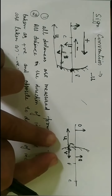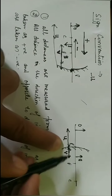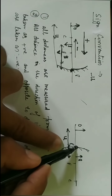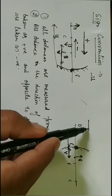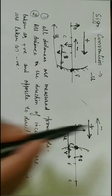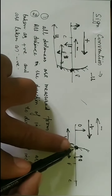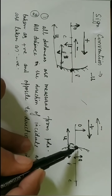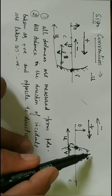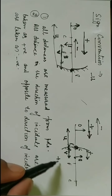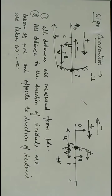Similarly, if you want to measure the image distance, you start your journey from P. You see the direction of incidence — opposite to it is taken as negative. From the pole, measuring the image distance means moving in the same direction as the direction of incidence, so it is taken as positive. Therefore, image distance is positive V. All distances in the direction of incidence are positive; opposite to the direction of incidence are negative.